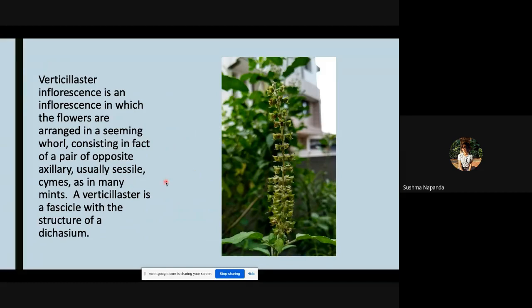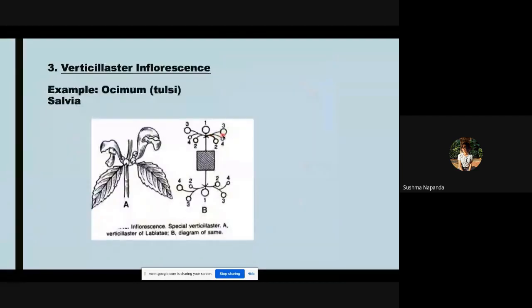As in many mints, a verticillaster is a fascicle with the structure of a dichasium, that is dichasial flowers.